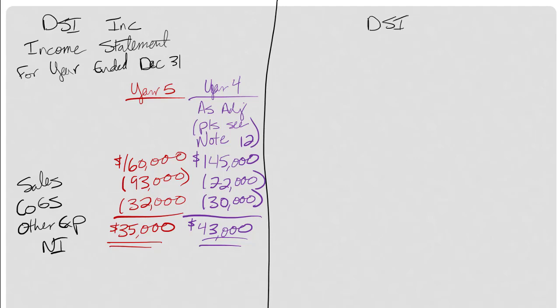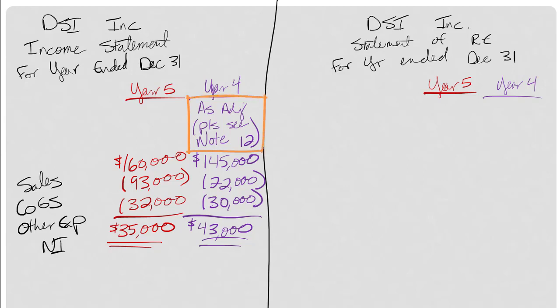Picking up where we left off, this is DSI incorporated statement of retained earnings for year ended December 31st. We're reporting two years worth of information - year five which is the current year, and year four. In the income statement we put a note that this was adjusted. We don't do that on the statement of retained earnings.